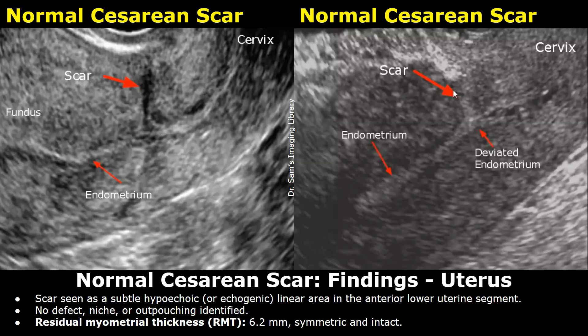You can then focus on the appearance of the cesarean scar if noted during the scan. You can mention the echogenicity of the scar, which can be either hypoechoic or echogenic depending on the age of the scar. Early scars usually appear hypoechoic and older scars appear echogenic. Scar seen as a subtle hypoechoic or echogenic linear area in the anterior lower uterine segment. No defect, niche, or outpouching identified.